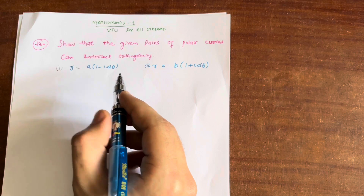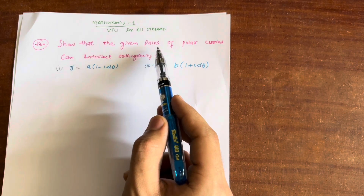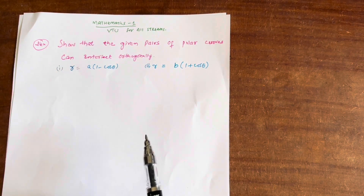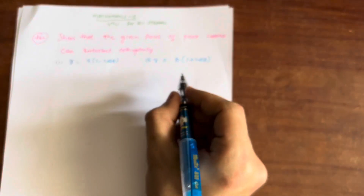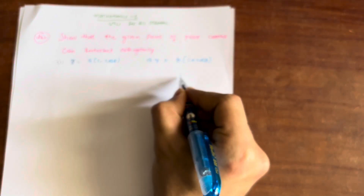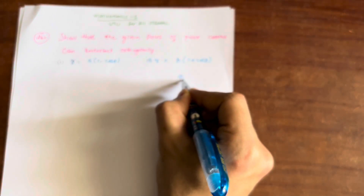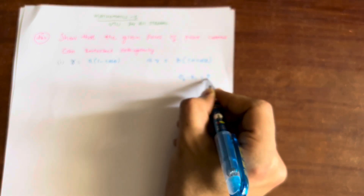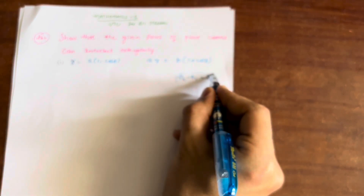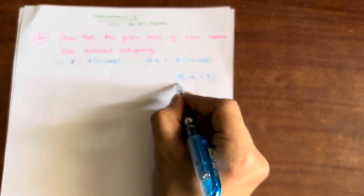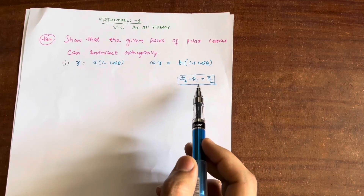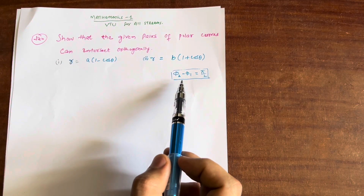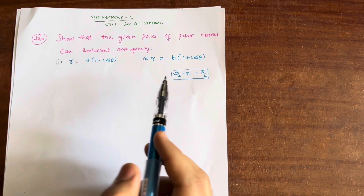Let me solve this particular question — how we can check that the given pairs of polar curves intersect orthogonally. There is a condition you should remember: if at the end of the question we get φ₂ minus φ₁ equal to π/2, then we can say that the given curves are intersecting orthogonally. Let me solve this first, then we will see how to get φ in the picture.